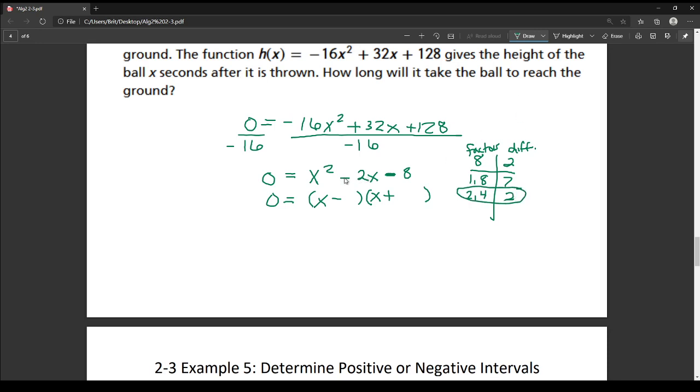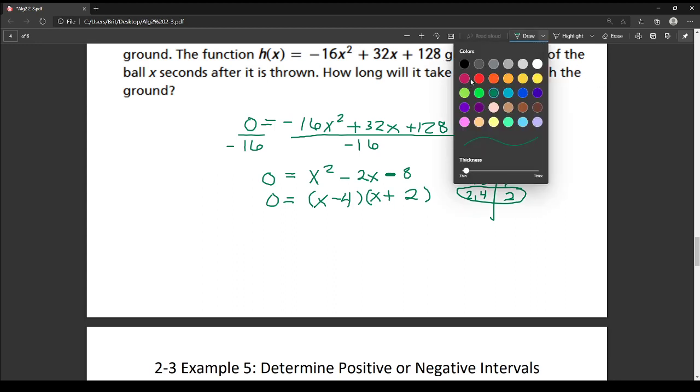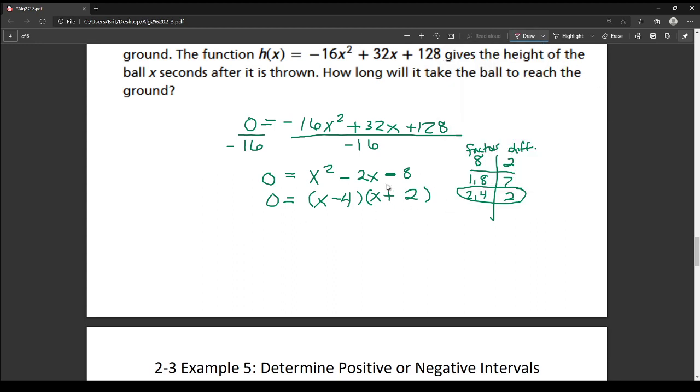Now to get a negative 2x for my b, my bigger value has to be the negative one. So I'm going to put the 4 where the minus is and the 2 where the plus is. So now we have factored it. Now we need to go about finding the zeros. So I'm going to set each of these factors equal to zero.